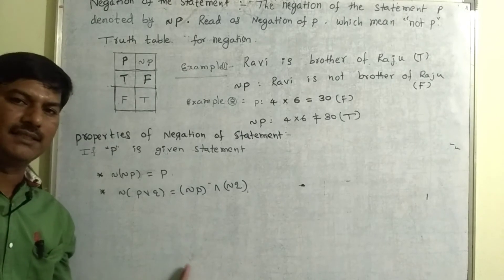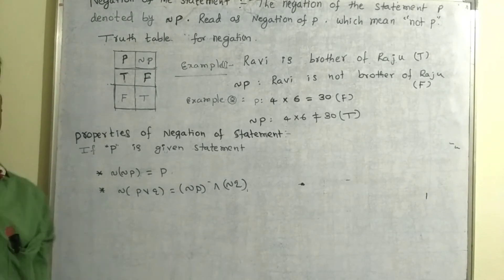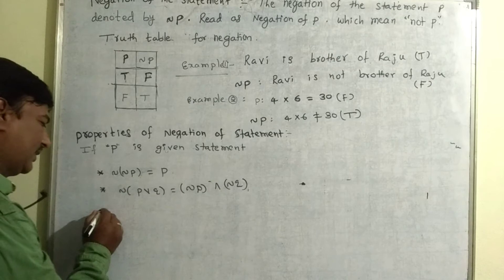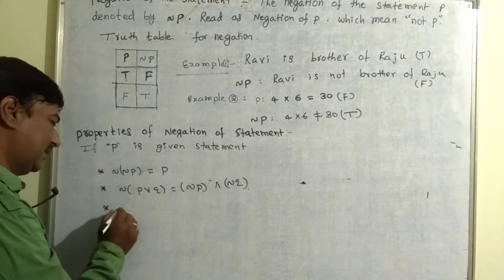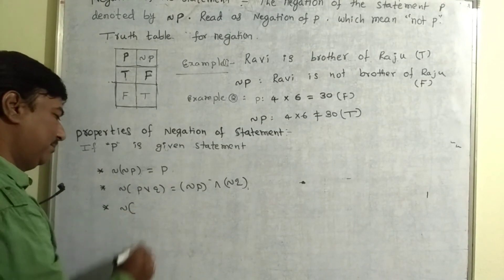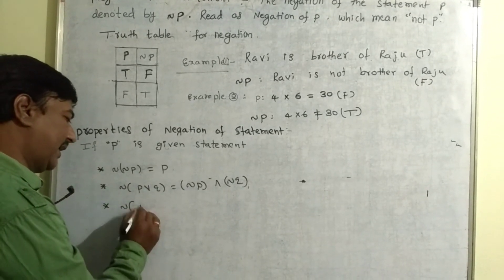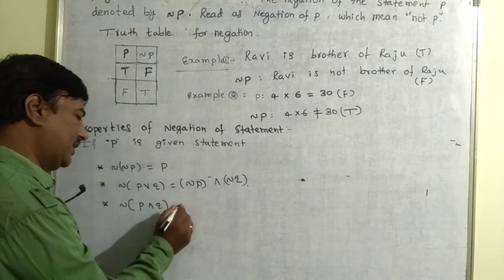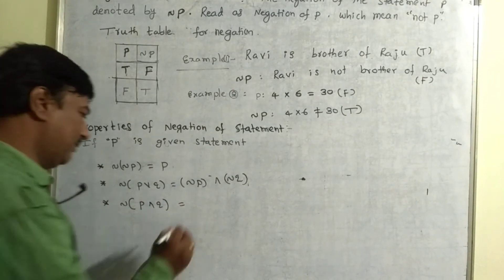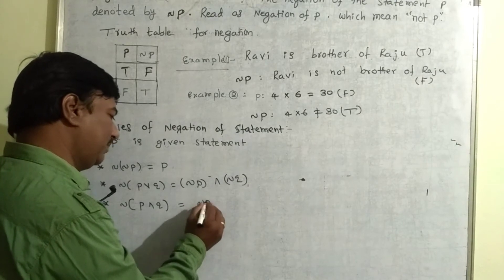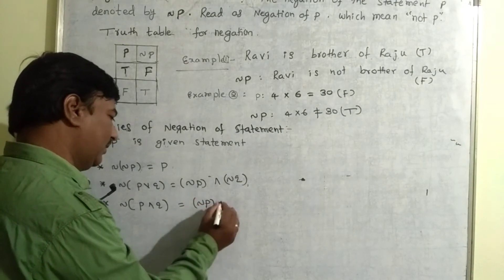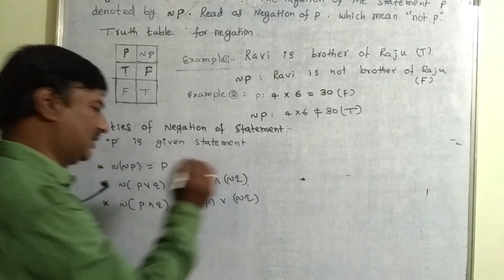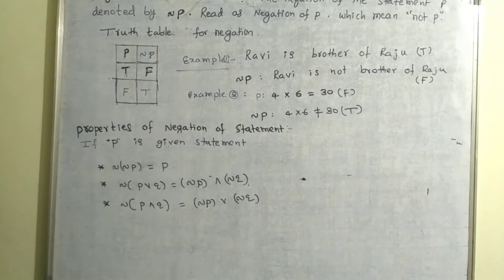We will discuss the definitions of disjunction and conjunction in the next video. Property number 3: the negation of P and Q is equals to negation of P or negation of Q.